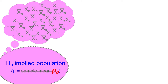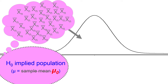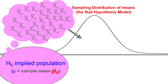We imagine a whole bunch of samples — millions and millions of them, infinite numbers — all taken from this population, each with the same sample size as our sample. We calculate a mean from each of those samples, giving us a sampling distribution of the means. This sampling distribution differs from the confidence interval version in exactly one way: the mean is the null hypothesis mean, not our sample mean. Then we place our sample mean in that distribution and see how unlikely it is in the null hypothesis's world.